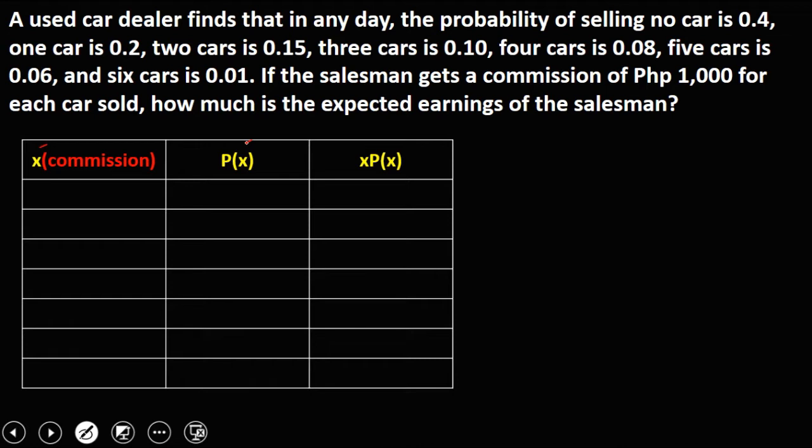Since the commission is 1,000 for every car, if no car sold then the commission is 0. If 1 car, that's 1,000, for 2 cars, that's 2,000, for 3 cars, that's 3,000, for 4 cars, that's 4,000, for 5 cars, that's 5,000.